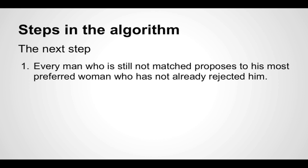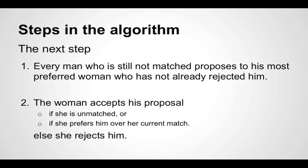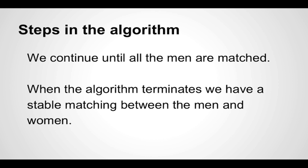If a man has been rejected, he proposes to the next woman on his list. She accepts his proposal if she's currently unmatched, or if she prefers him over her current partner — in which case she rejects her current partner and accepts the new proposal. If she prefers her current partner, she rejects him and he moves on to propose to the next woman on his list. This continues with all currently unmatched men until all men find a partner, at which point the algorithm terminates and we have a stable matching.